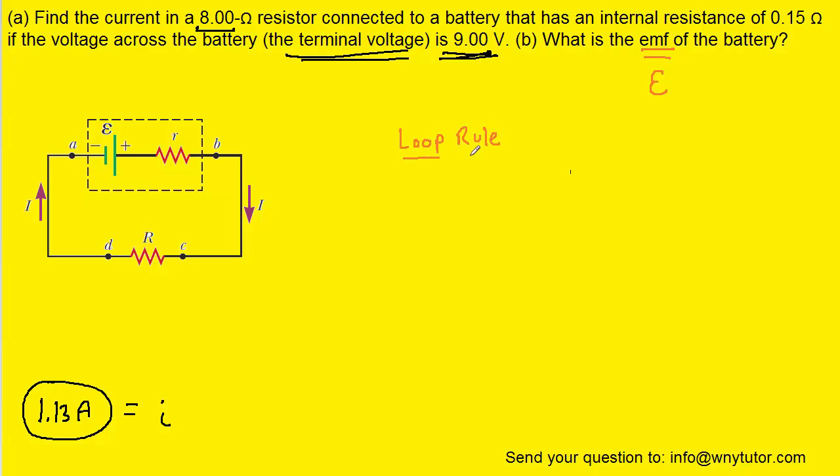And when we apply the loop rule, what we do is pick an arbitrary starting point. So perhaps we can start here at point A. And we're going to move around the loop until we return back to that point. Now as we move our way around the loop, we want to be keeping track of potential changes. And that's what we're about to do.